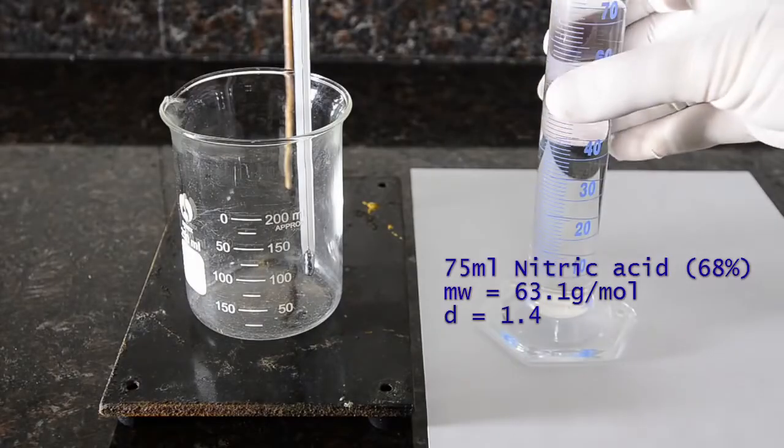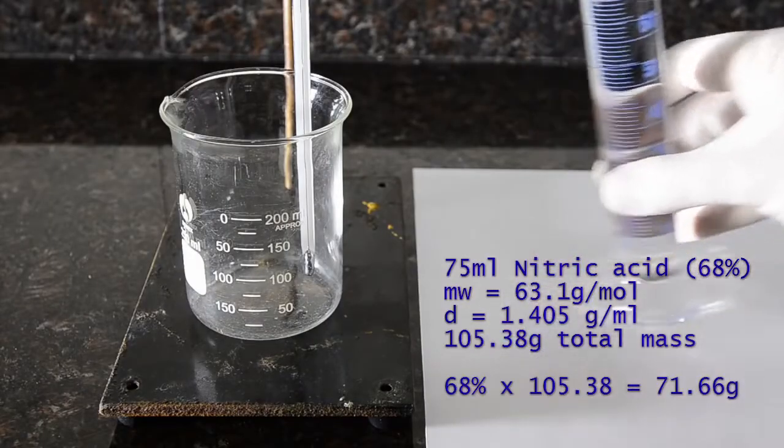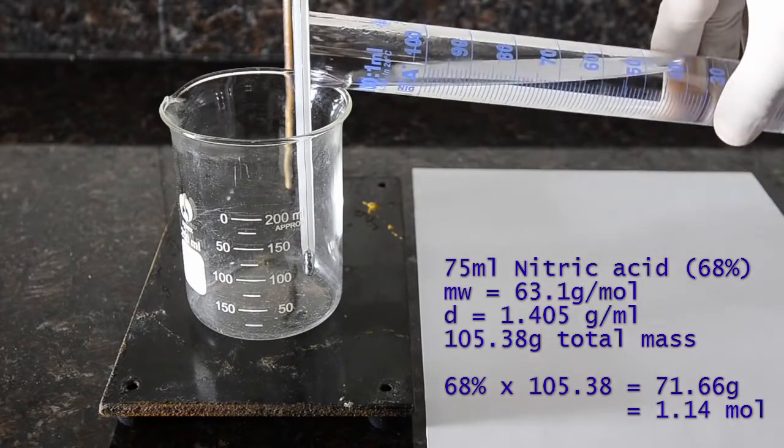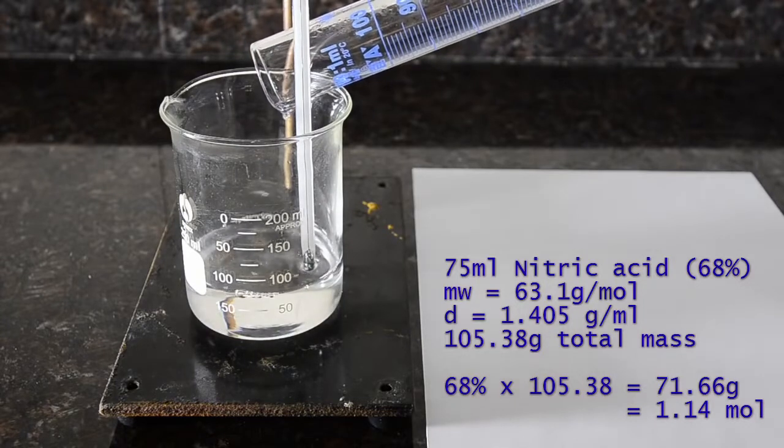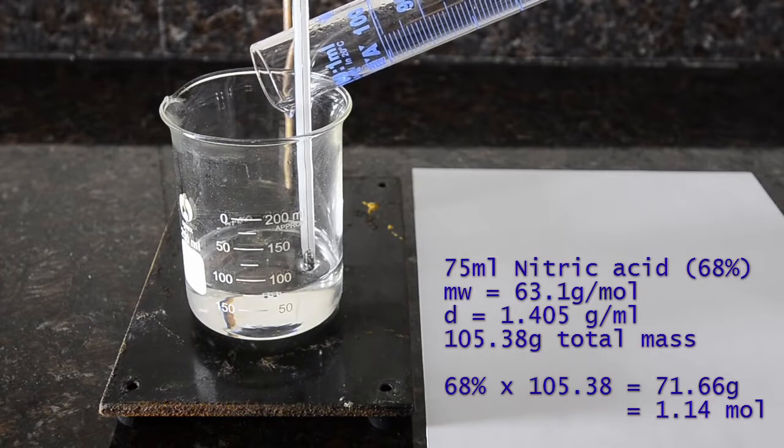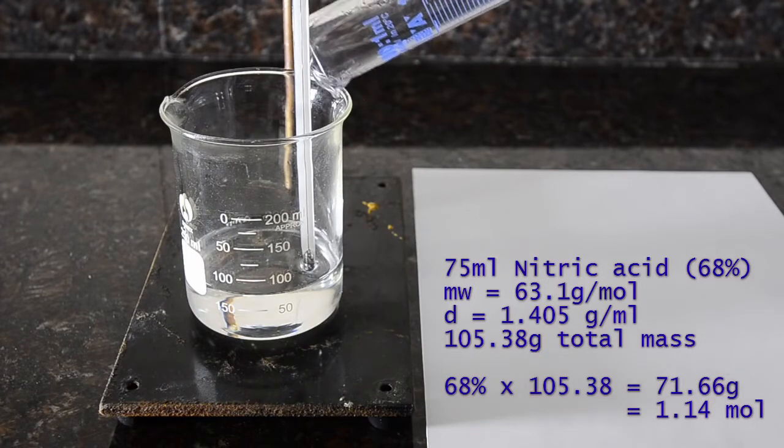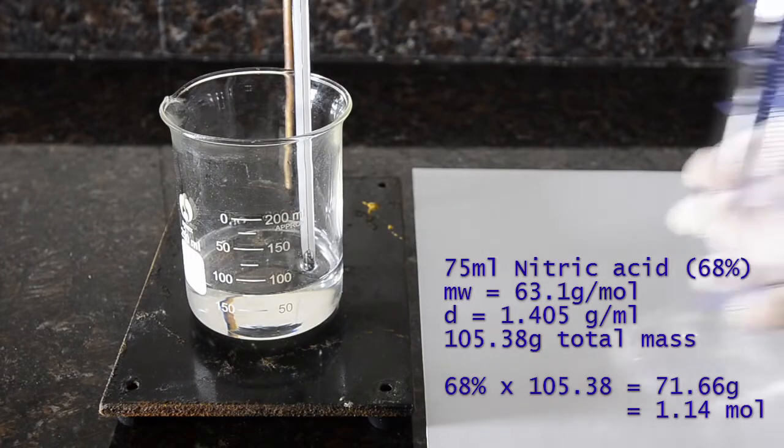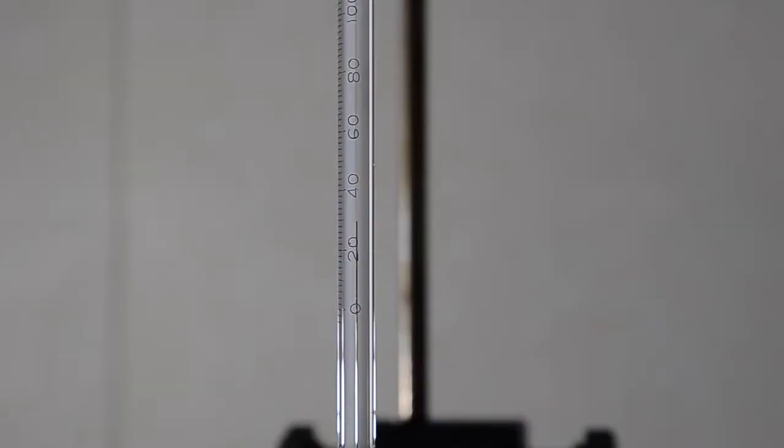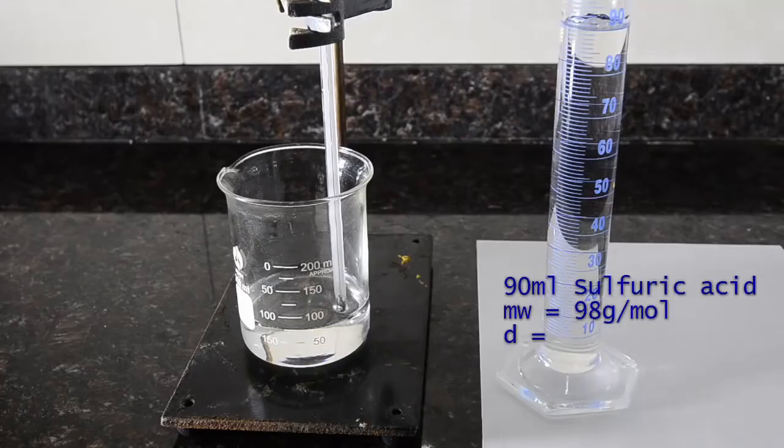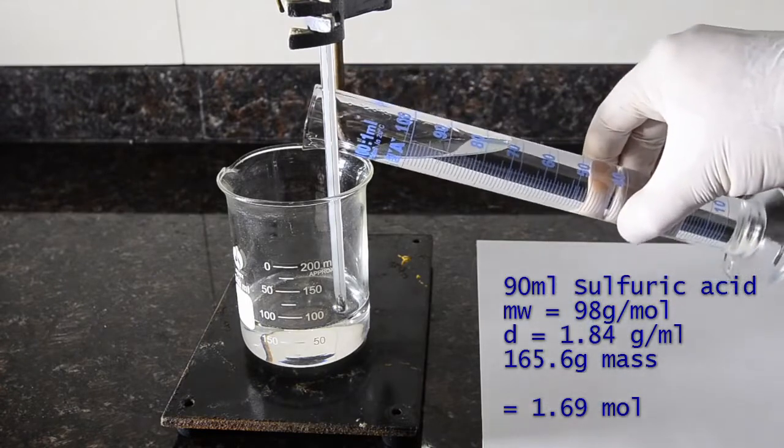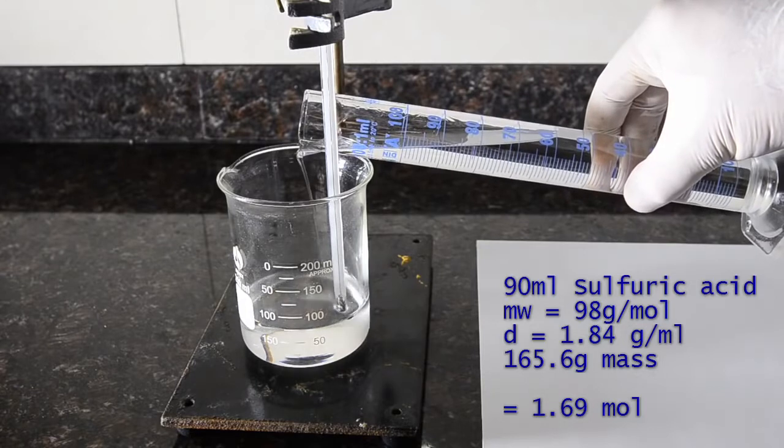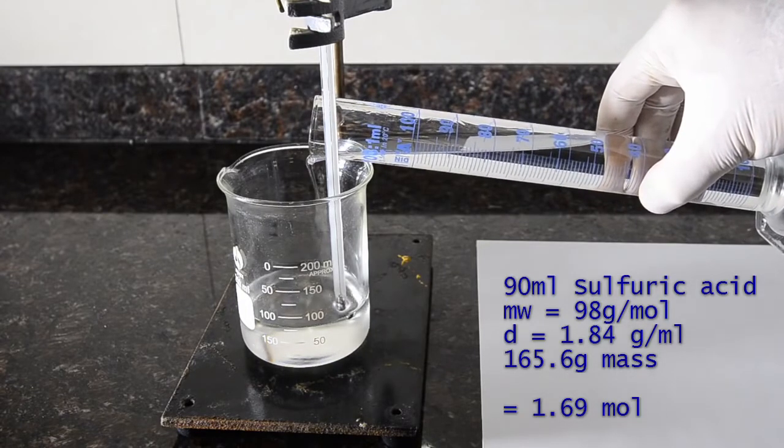The first step is to prepare our nitration mixture. Here we have 75 ml of concentrated nitric acid, concentrated means that it is actually approximately 68% acid which is the concentration that forms an azeotrope with water. Note the starting ambient temperature of the nitric acid. To this we slowly and carefully add 90 ml of concentrated 98% sulfuric acid. The temperature of the mixture will rapidly rise on addition, so be careful with this step.